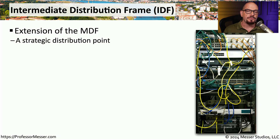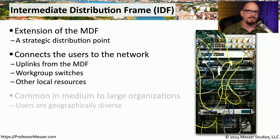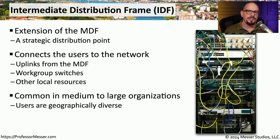Another type of distribution frame is the intermediate distribution frame, or the IDF. Usually the IDF is in a separate floor or a separate building, and it's often directly connected to the MDF. Most IDFs these days include switches, routers, and other equipment that you need to connect this area of the network to the larger MDF. You usually find this combination of MDFs and IDFs in medium to larger scale environments, where you need to have many different remote rooms all connecting back to the central data center.